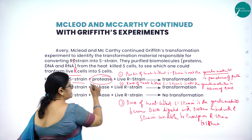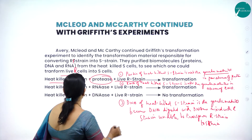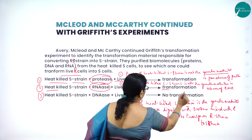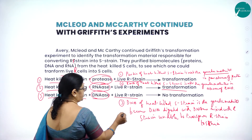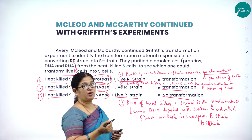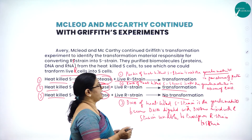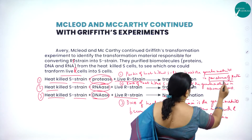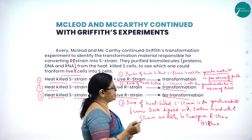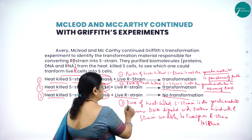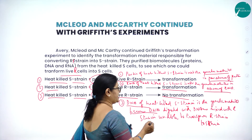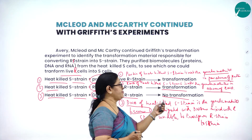From heat-killed S-strain, they added the enzyme protease with live R-strain — there was no transformation. Second, heat-killed S-strain with RNase plus live R-strain — there was transformation. Third, heat-killed S-strain with DNase plus live R-strain — there was no transformation. This showed that protein of heat-killed S-strain is not the genetic material, RNA of heat-killed S-strain is not the genetic material, but DNA of heat-killed S-strain is the genetic material, because when DNA was digested with DNase and mixed with R-strain, there was no transformation.